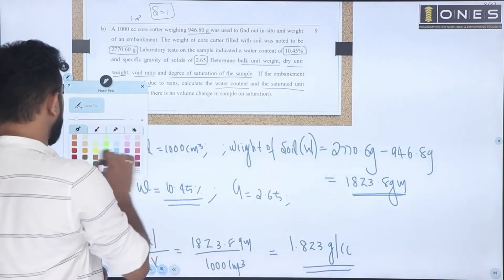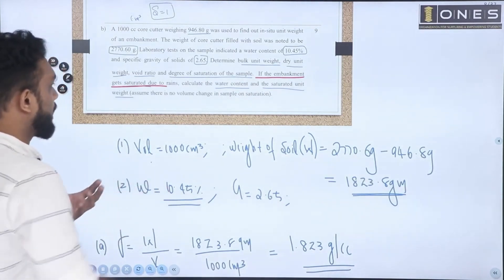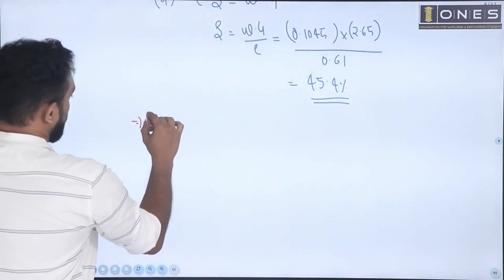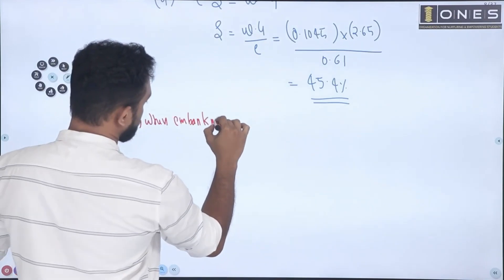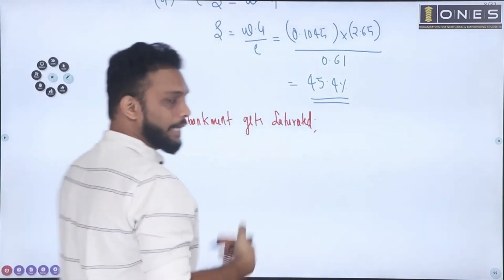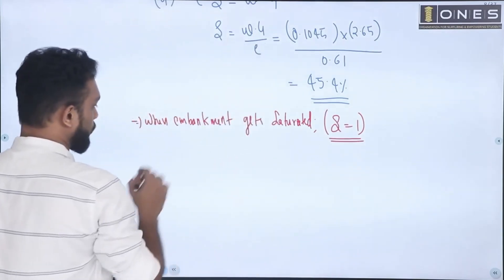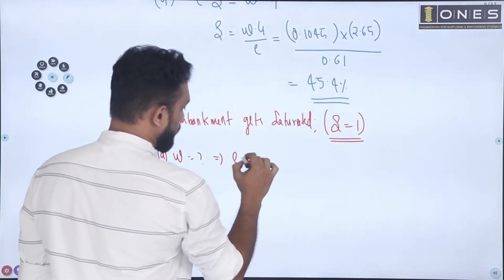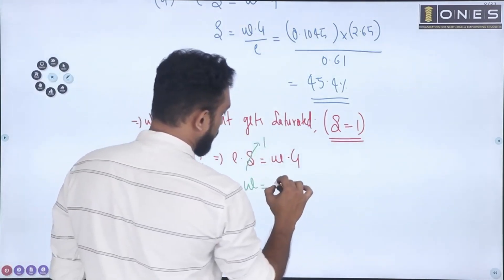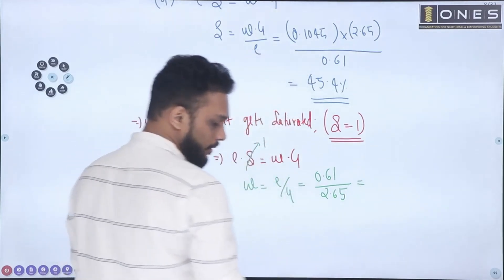An additional question: if the embankment gets saturated, what is the water content? Using the equation e times S equals w times G, with S equal to 1 for full saturation: water content w equals e divided by G. Substituting e equal to 0.61 and G equal to 2.65 gives w equal to 0.23, meaning 23%.